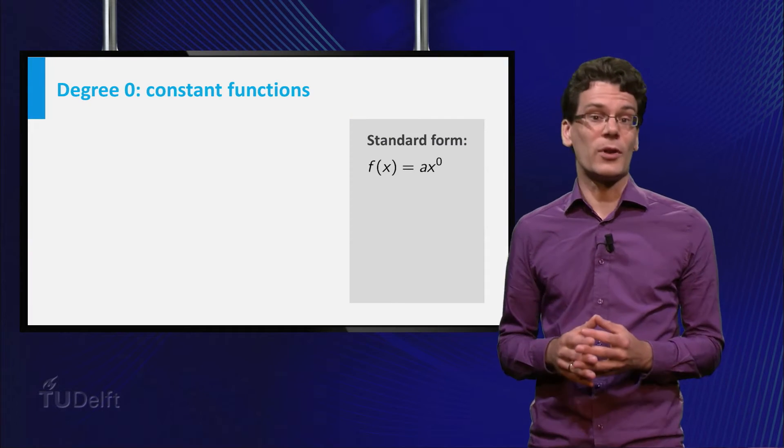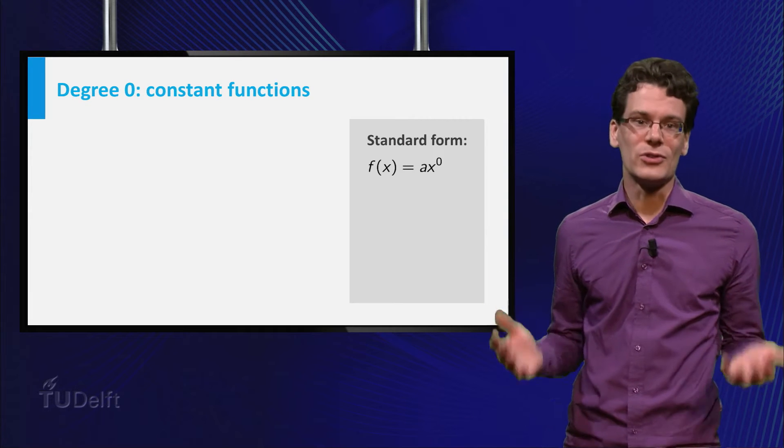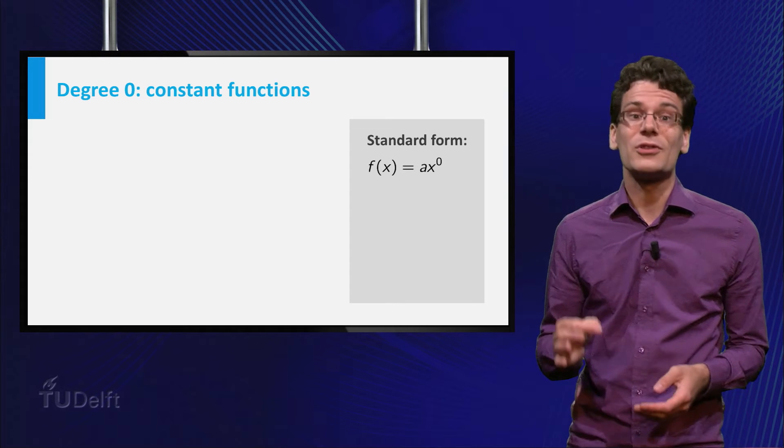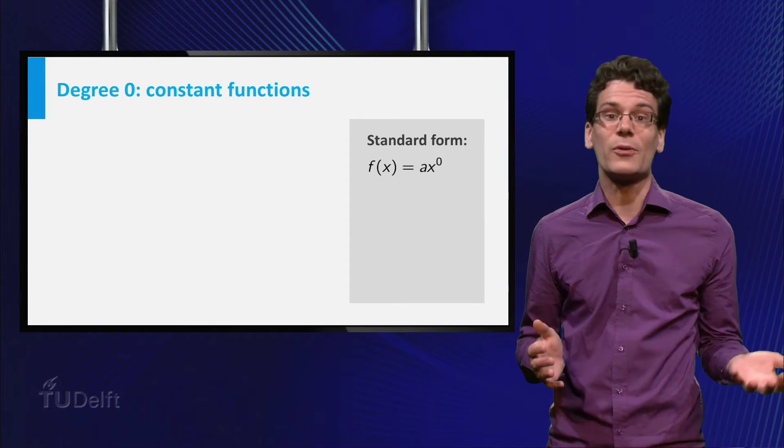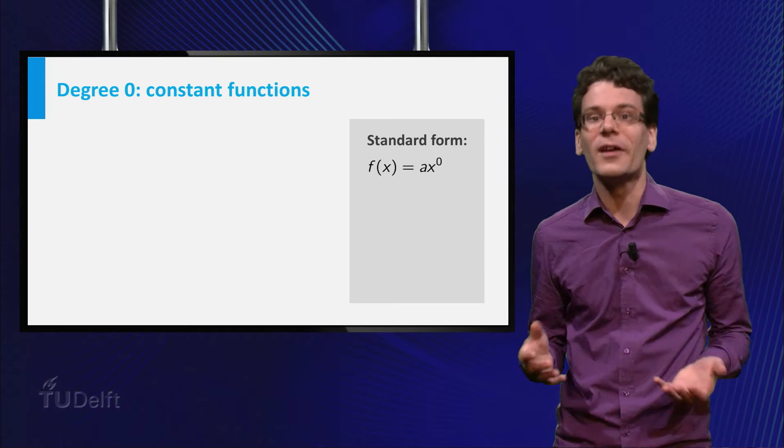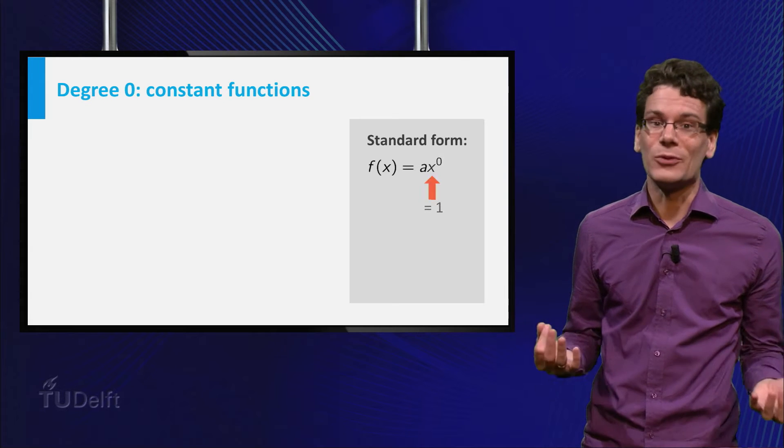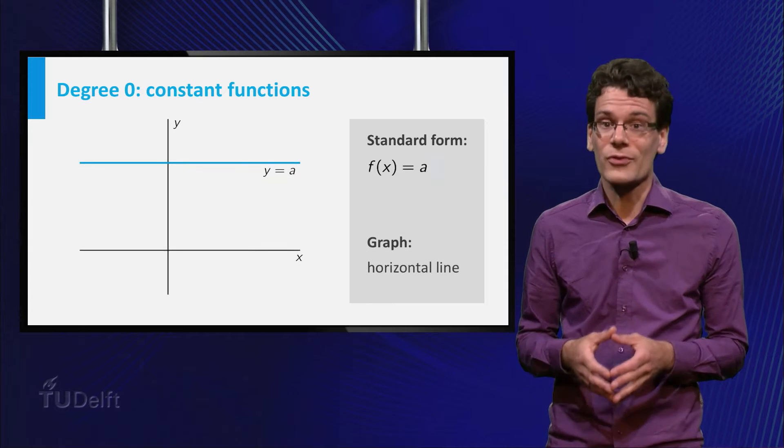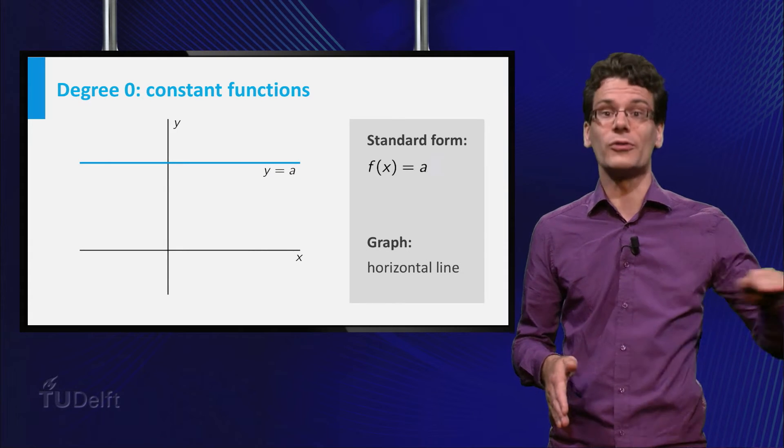The easiest non-zero polynomial functions are those of degree 0. Is that possible? Yes, we can write these functions as f of x equals a times x to the power 0. Now remember that x to the power 0 is equal to 1. So these are just constant functions. The graphs of these functions are simply horizontal lines.